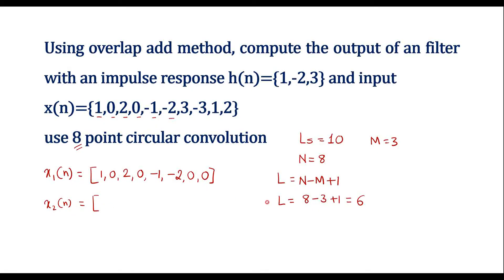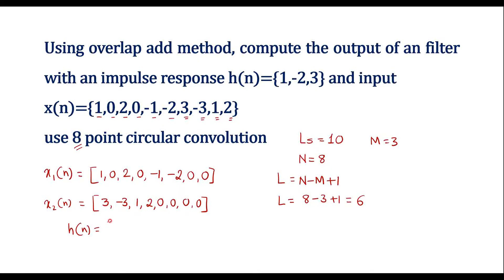The next sub-block x2[n] consists of the remaining samples {3, -3, 1, 2}. Since there are only 4 samples but L = 6, we add 2 zeros to reach L samples, then append M-1 = 2 more zeros, giving x2[n] length 8. h[n] is zero-padded to 8 samples: {1, -2, 3, 0, 0, 0, 0, 0}.